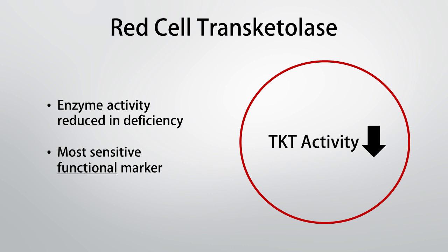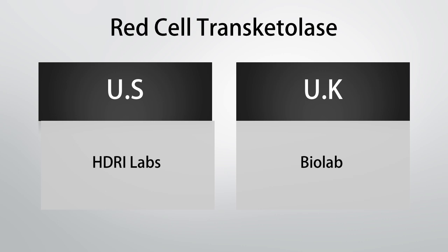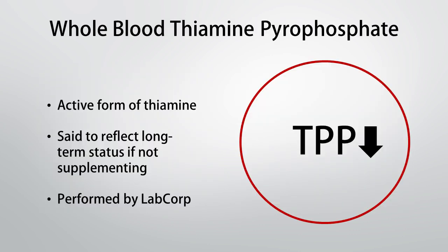There is a potential problem with erythrocyte transketolase. Dr. Derrick Lonsdale found that it doesn't always tell you what you need to know — sometimes the activity would come back normal but the person was still thiamine deficient and still responded to supplementation. In his practice, they used another test called the thiamine pyrophosphate effect in conjunction, but unfortunately no lab currently offers it. In terms of where to find erythrocyte transketolase, you would find it in the US at HDRI Labs or in the UK with a lab called Biolab.